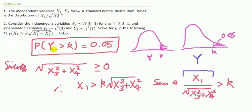This thing here is the same as dividing through by square root of blah. And now it is of the form Y bigger than a number, because this whole ratio here is our variable Y, let's call it Y, and it's bigger than a number k.